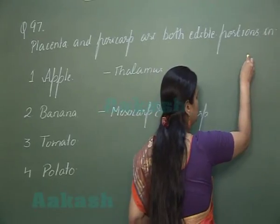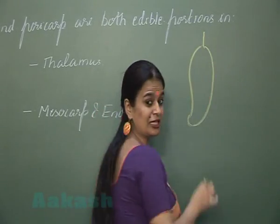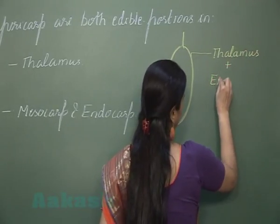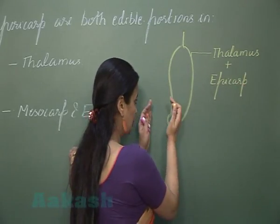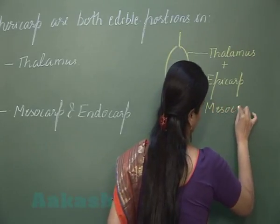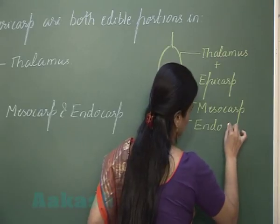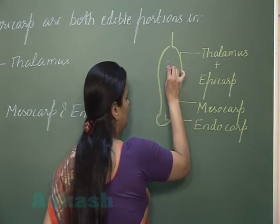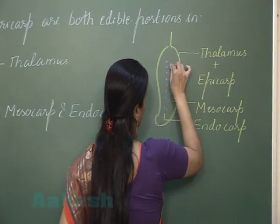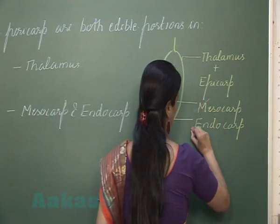In banana there is presence of skin, and the skin is formed by fusion of thalamus and epicarp. Below the epicarp, the edible part present is mesocarb, and on the inner side the edible part is endocarb. In the endocarb you will see minute structures which represent unfertilized ovules. So the edible part here is mesocarb and endocarb.